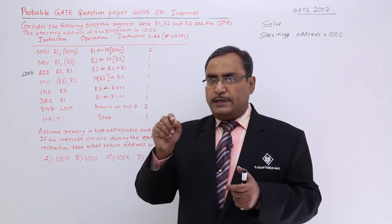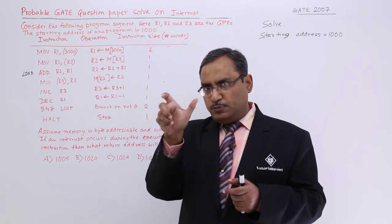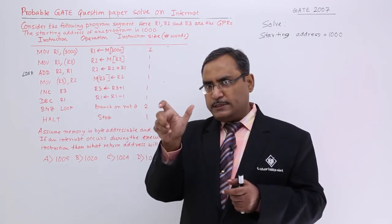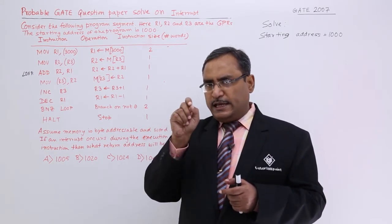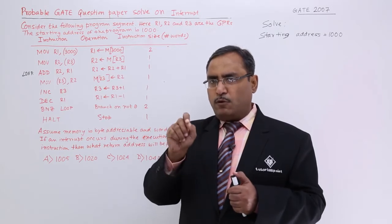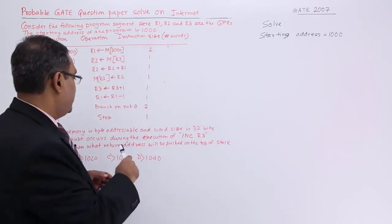Because 32 by 8 is equal to 4. Each and every instruction is of 32 bits, word size is of 32 bits and each and every location can hold 8 bits of data. That means each and every instruction will take 4 bytes to get represented inside the computer's memory.